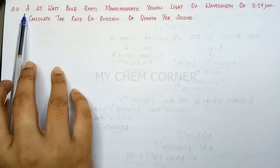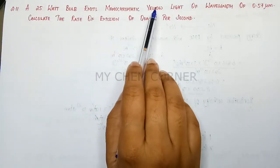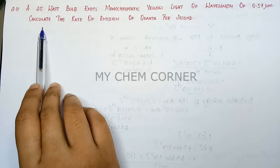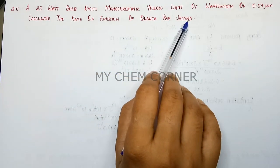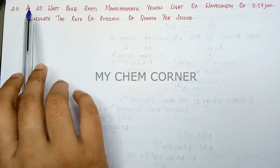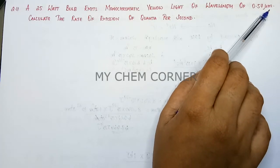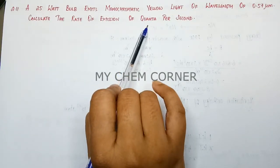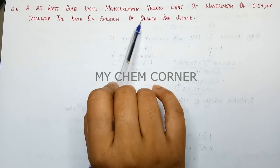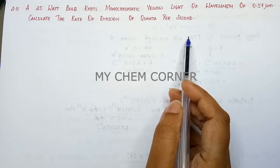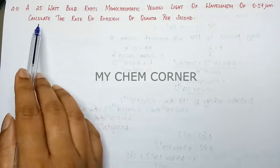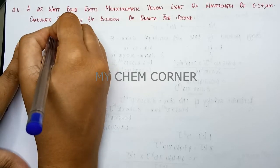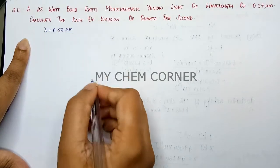Question 2.11 from NCERT: a 25 watt bulb emits monochromatic yellow light of wavelength 0.57 micrometer. Calculate the rate of emission of quanta per second. The wavelength given is 0.57 micrometer. Quanta basically means small packets of energy, and they travel in the form of light. So lambda equals 0.57 micrometer.